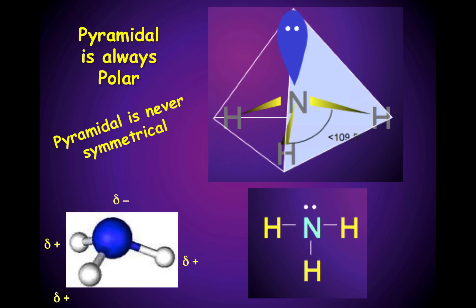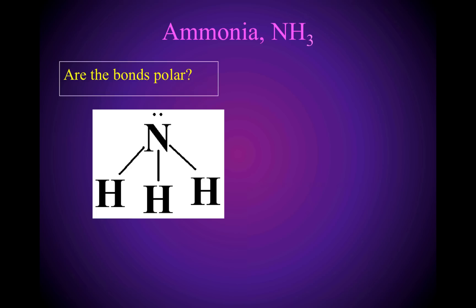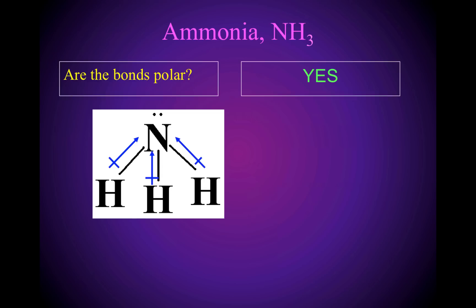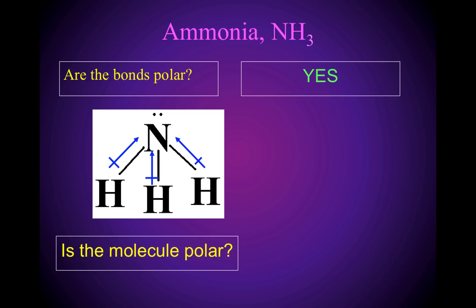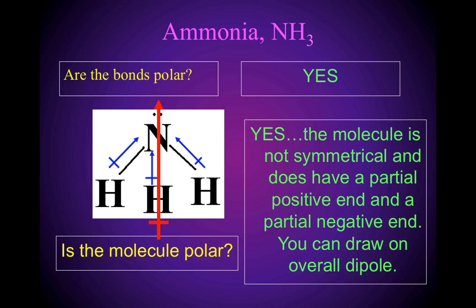Pyramidal is also always polar — it is never symmetrical. The bonds between nitrogen and hydrogen are not symmetrically arranged around the nitrogen atom. That lone pair of electrons at the top of nitrogen takes up a lot of space, making this an asymmetrical molecule. Because it has polar bonds, the molecule is polar. The bonds are directed towards the nitrogen. It has a partial positive end and a partial negative end, and you can draw in an overall dipole.